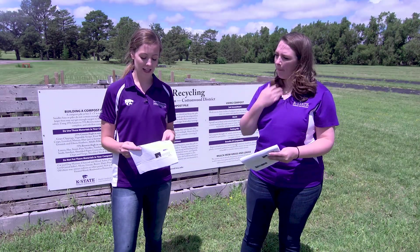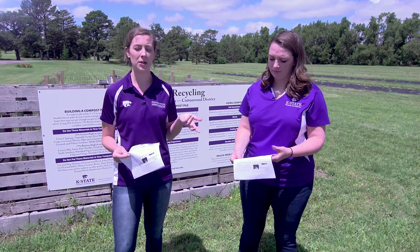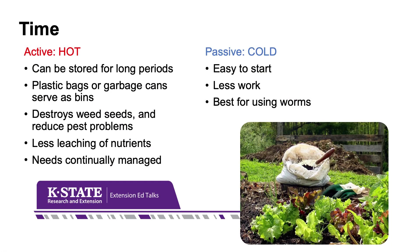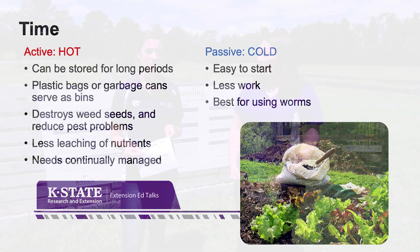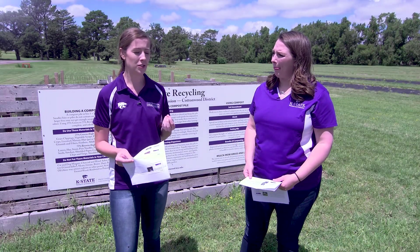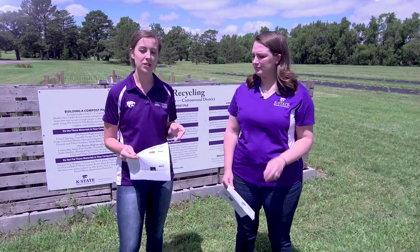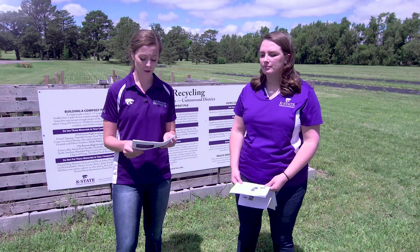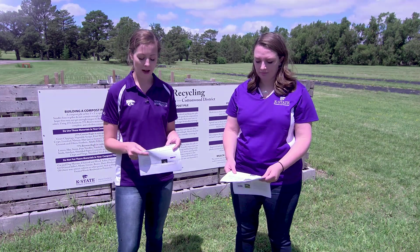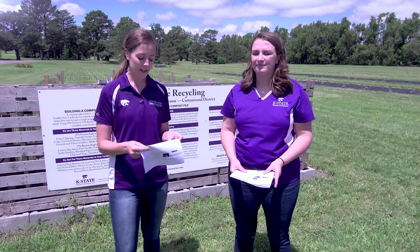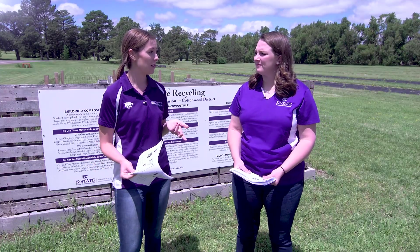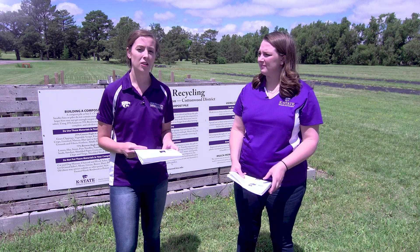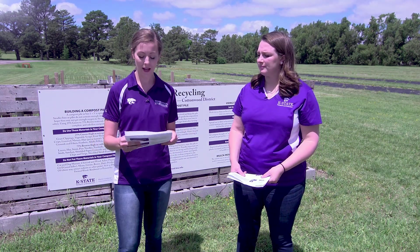How long your compost takes depends on whether you have a hot or cold compost pile. For hot compost, you want the temperature to be about 130 to 160 degrees. Hot piles can be stored for longer periods and will destroy any weed seeds you put in, but they need more maintenance and turning. For cold compost, the temperature should be about 120 to 140 degrees. It's less work, great for worms, but takes about eight to twelve months for materials to break down.